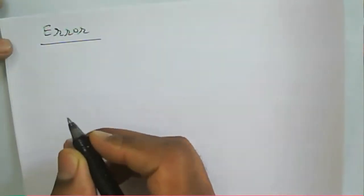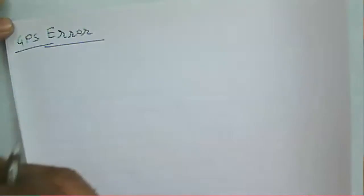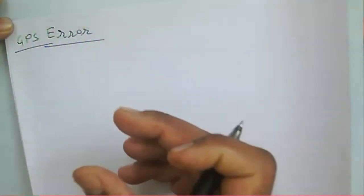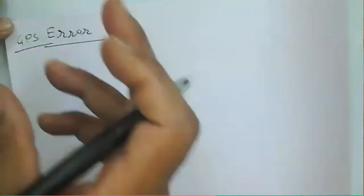We have seen the GPS system with its control segment and space segment. Next, we look at the various errors in GPS. We will see what the various errors are and from those errors find what carrier-to-noise ratio is required for the received signal.